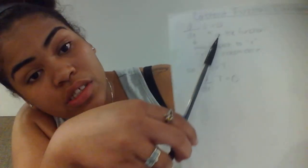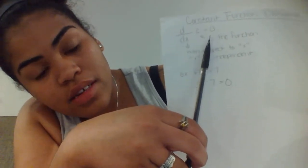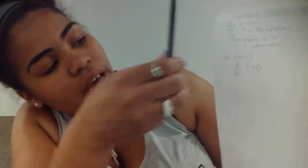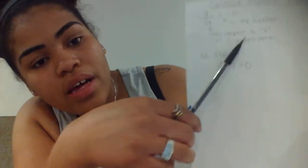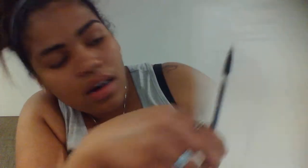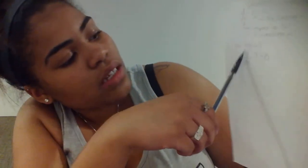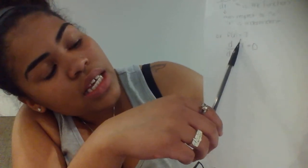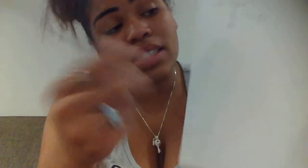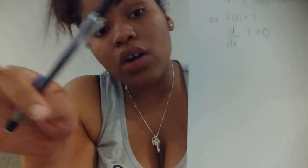Next we have the constant function derivative. The derivative of c, which is your constant, always equals zero — no matter what it is, it always equals zero. So c is your function, and whenever you have x, or t, it's with respect to that variable. When we take the derivative of 7, it will be zero, because 7 is a constant, and any constant alone without x or anything else is zero.